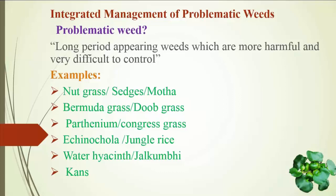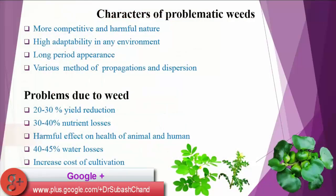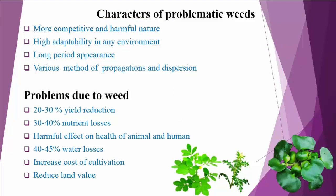Some examples of problematic weeds are nut grass, sage, bermuda grass, parthenium, jungle rice, water hyacinth, kans, and petish sheep. Major identity characters of problematic weeds are more competitive and harmful nature, high adaptability in any environment, long period appearance, and various methods of propagation and dispersion.